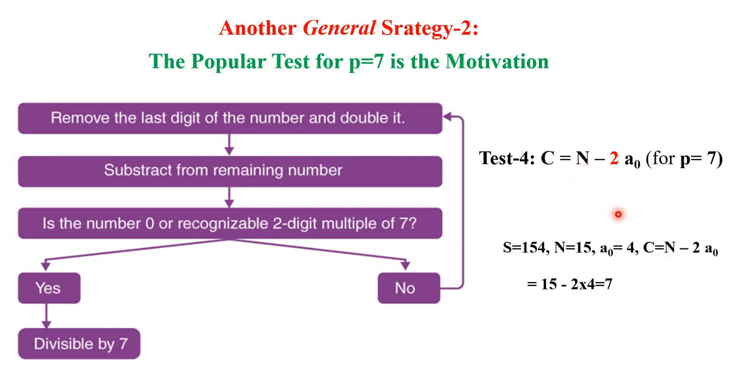N is the truncated number after dropping the a₀ digit and multiplying by 2 and then subtracting from N. So that is the test 4. For example, 154. So after dropping the last digit 4, we get 15 and 4 into 2 is 8. So 15 minus 8 is 7, which is divisible by 7. So the given number S is also divisible by 7. So that was the strategy for p equal to 7, a popular one.